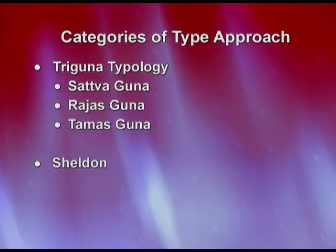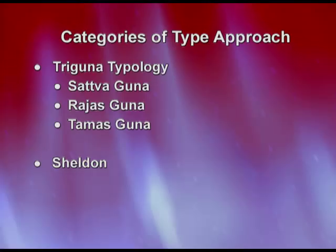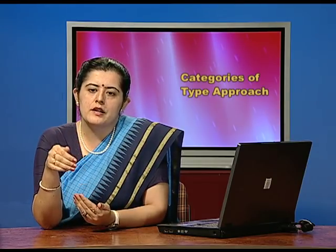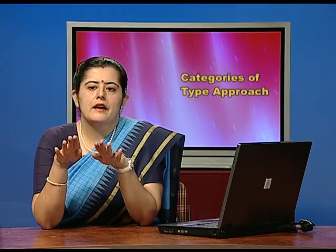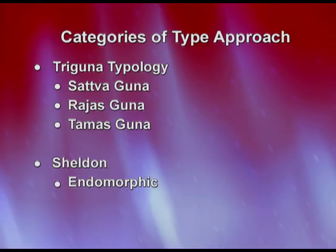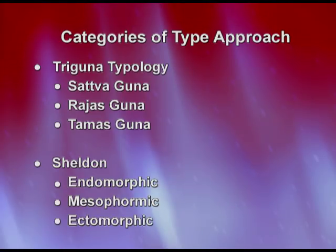The third type classification is Sheldon's, based on body build and temperament. He gave three categories: Endomorphic — people who are fat, soft, and round, who are sociable and relaxed; Mesomorphic — people with a strong muscular build who are sporty and adventurous; and Ectomorphic — people who are very thin and fragile and tend to be artistic and creative.